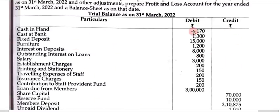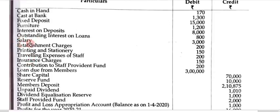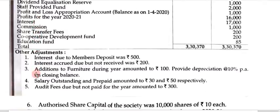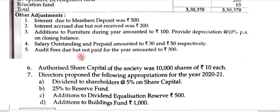This is the trial balance of Pimpri People's Cooperative Credit Society. There are some amounts given in the debit side and credit side. First is cash in hand, cash at bank, fixed deposits, furnitures, interest on deposit, salary, establishment charges, printing and stationery, traveling expenses of staff, insurance charges, contribution to provident fund, staff provident fund, loan due from members, etc.